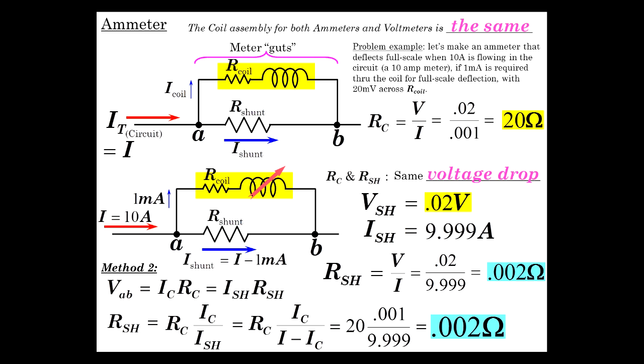So basically, 2 milliohms is the shunt resistance. And that will give you a pretty decent current meter.